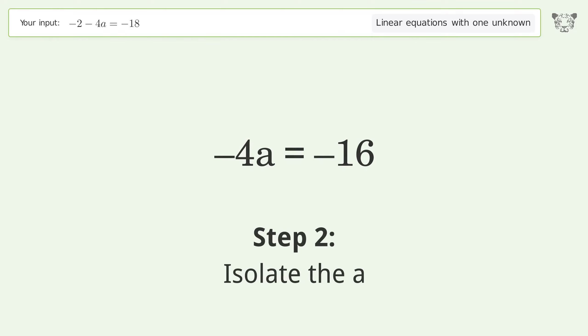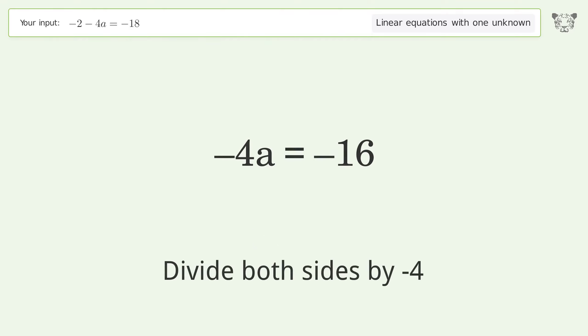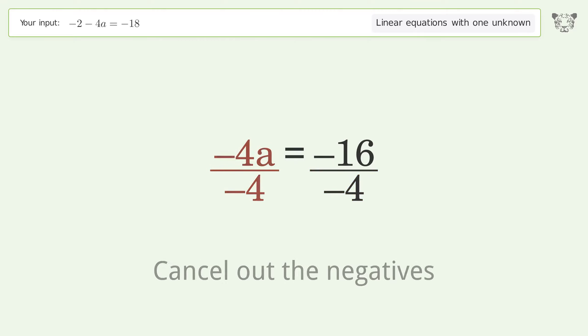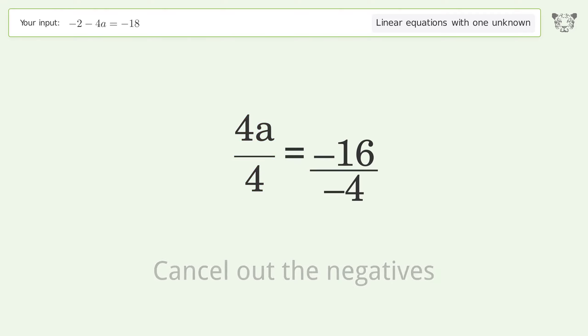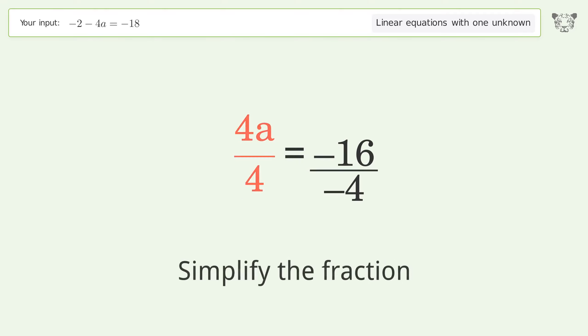To isolate a, divide both sides by negative 4. Cancel out the negatives, then simplify the fraction.